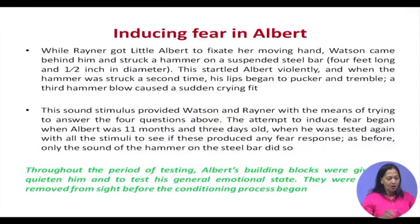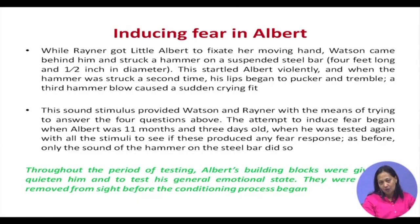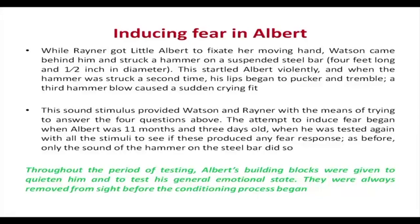What did Watson and Reiner do to induce fear in Albert? While Reiner got Little Albert to fixate on her moving hand — she kept moving her hand and Albert was made to hold it still — Watson came behind the child and suddenly struck a hammer on a suspended steel bar, creating a loud sound. This startled Albert violently. When the hammer was struck a second time, his lips began to pucker and tremble, and after the third blow he started to cry. This sound stimulus provided Watson and Reiner with the means of answering their four questions.